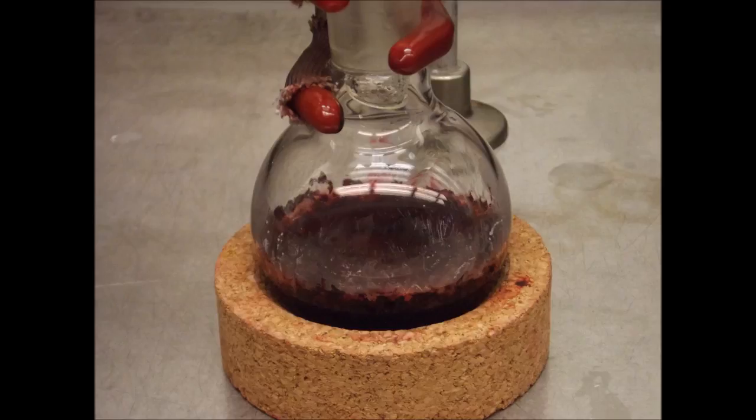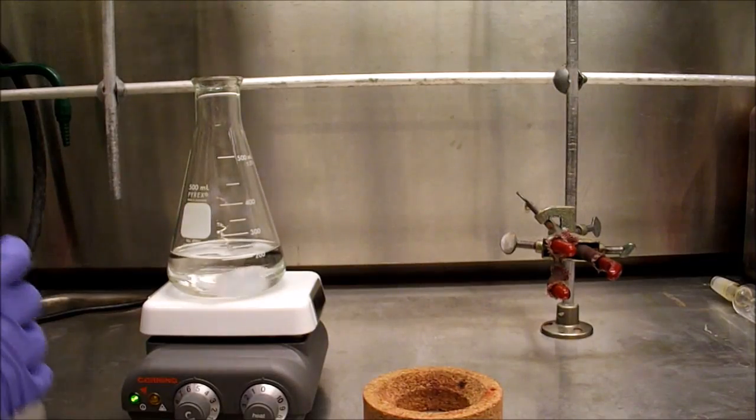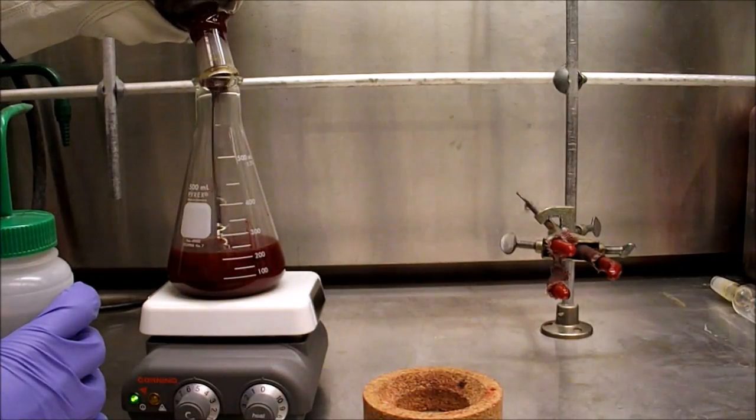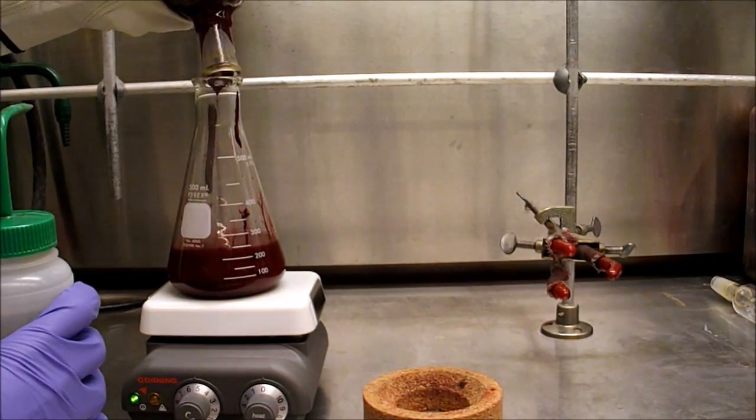To a 500ml Erlenmeyer flask is added about 200ml of methanol and it is stirred rapidly. At this point, the reaction mixture is immediately added to the methanol.